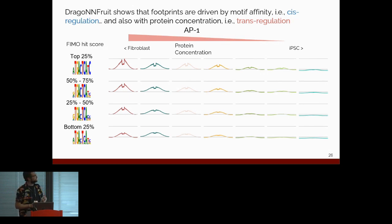What's really interesting here is that it's not just, oh, accessibility goes down. What you can see is that if you look at the footprint, that you can see that the footprint diminishes as an aspect of cis-regulation and not as an aspect of trans-regulation. And this makes sense. As the motif affinity goes down, the protein is going to bind less to that specific site. Just because the protein concentration goes down doesn't mean that the footprint is going to be as diminished. So, that's really an aspect of cis-regulation that DragonFruit is pulling out.